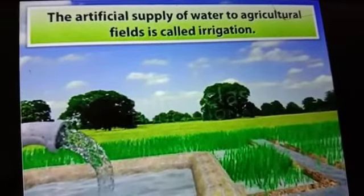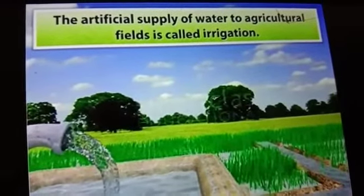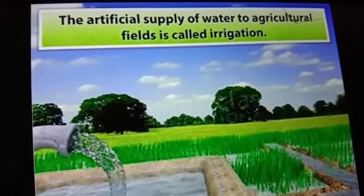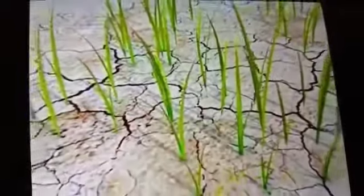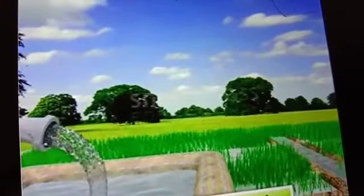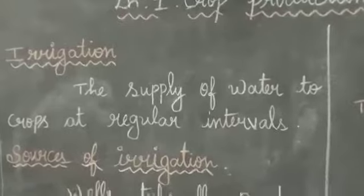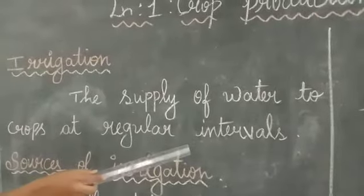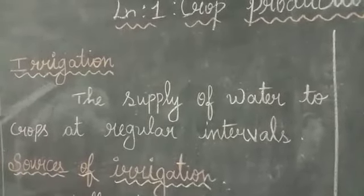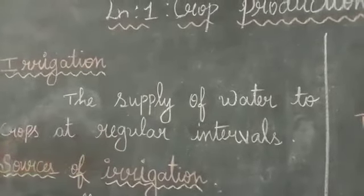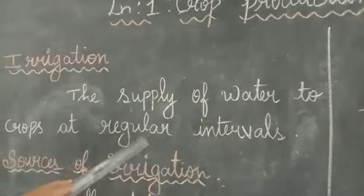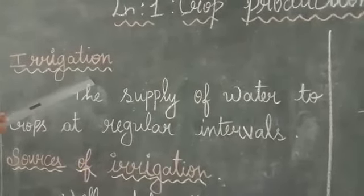The artificial supply of water to agricultural fields is called irrigation. Absence of moisture in the soil leads to frost and hot air currents. The artificial supply of water to crops at regular intervals is called irrigation. Here, interval means time — at regular time intervals.